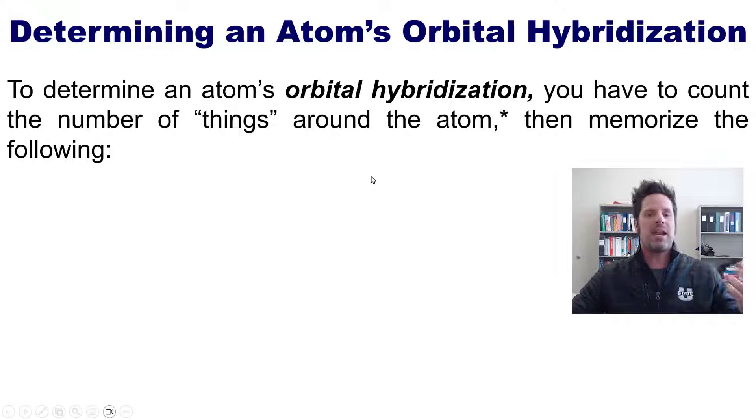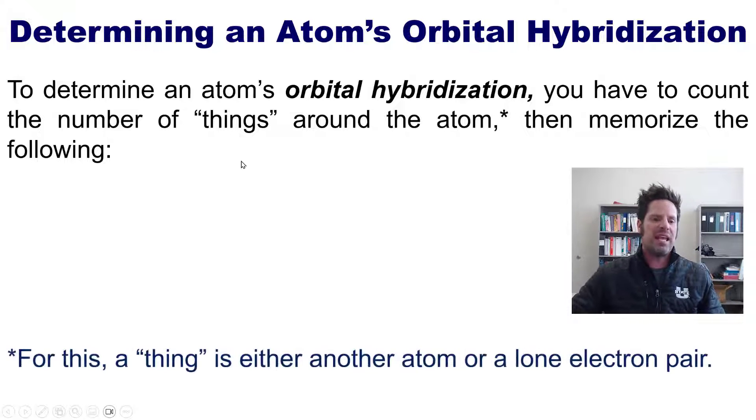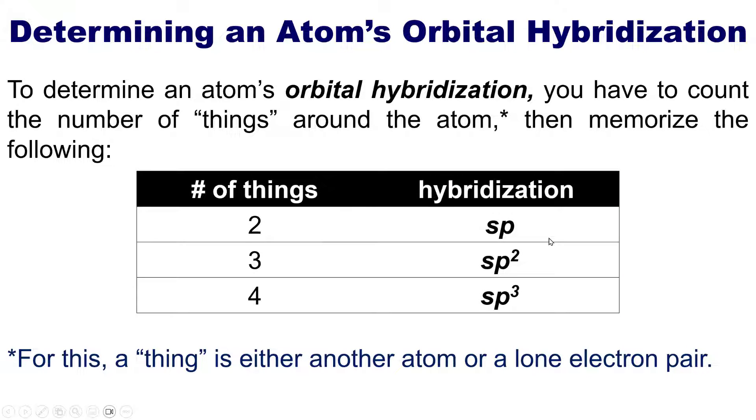All right, so to determine an atom's orbital hybridization, which is something we have to do sometimes, you just have to count the number of things around the atom and then memorize the stuff I'm going to show you in a moment. Now when I say things, by the way, I'm referring to either other atoms or lone pairs. So a lone pair counts as one thing, another bonded atom counts as one thing. Once I count those number of things around the central atom, I can determine that central atom's hybridization by memorizing the stuff shown right here. If my number of things is two, then my hybridization is sp. If it's three, then the hybridization is sp2. And if it's four, then its hybridization is sp3.